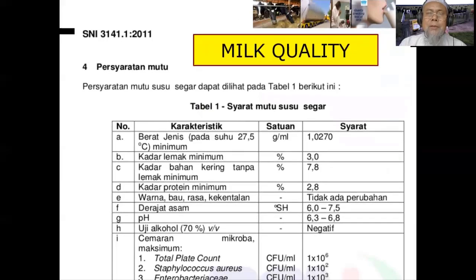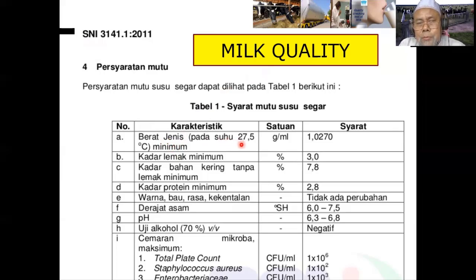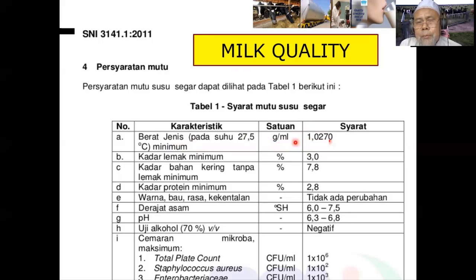Kita lihat satu per satu. Mutu susu kita ukur dengan SNI. Ada persyaratan berat jenis. Kalau diukur pada suhu 27,5 derajat, minimum, ada kata-kata minimum ini sangat penting, yaitu minimum 1,027 gram per mililiter.